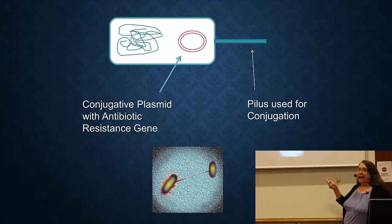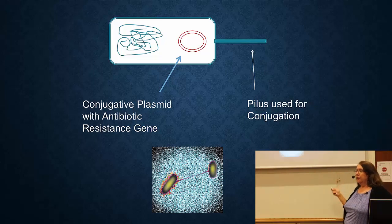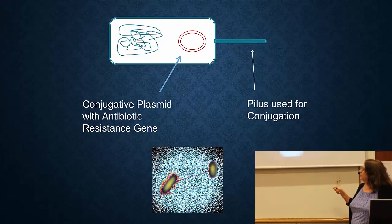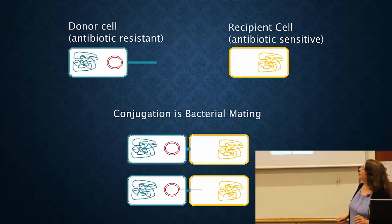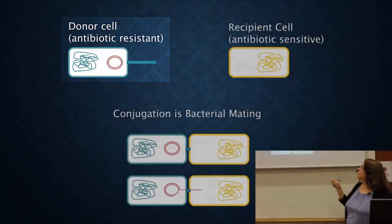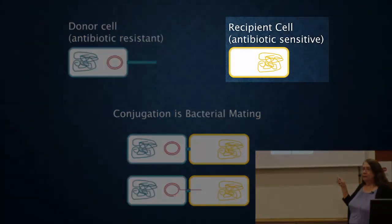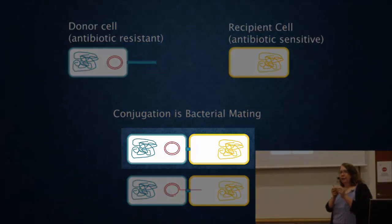Some plasmids are called conjugative. Conjugative plasmids have extra features: they produce a pilus — an appendage off the cell used for conjugation. Here is an actual picture of two cells where one is expressing this pilus and attaching to another cell. So the pilus is needed to attach to another cell. The cell that is resistant is called the donor; it produces a pilus, grabs hold of the recipient cell, and then the pilus is retracted, bringing the two cells very close together.